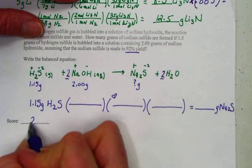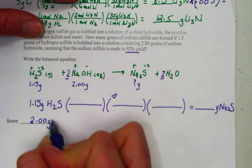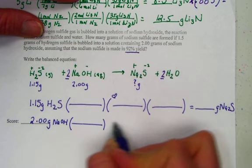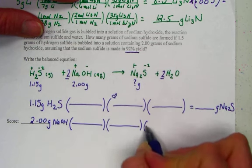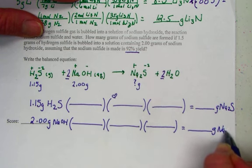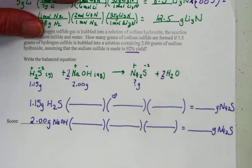But we'll have a second to also solve for 2 grams of sodium hydroxide. Getting our three parentheses ready, we still have the same target, grams of the product sodium sulfide.